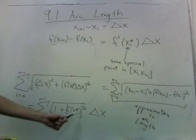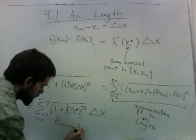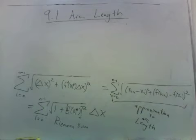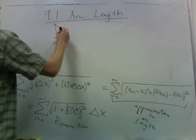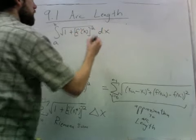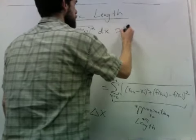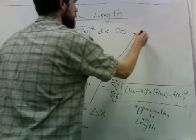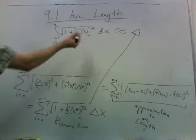And this is good because this here is actually a Riemann sum. It's the Riemann sum for this integral. So it turns out as the limit as n goes to infinity here, we get this integral. So the whole point of this demonstration is that here's our formula for arc length.